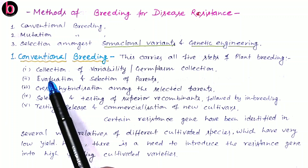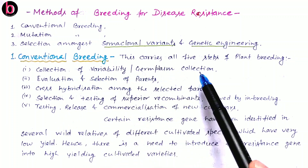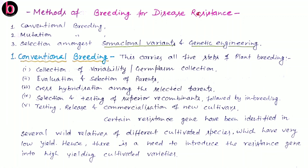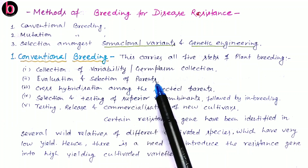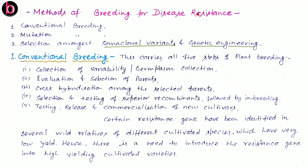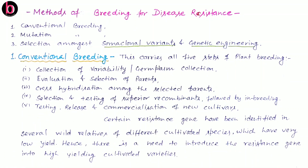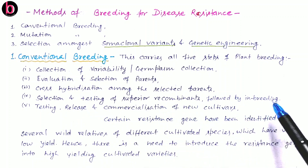The first step is collection of variabilities or germplasm collection — we collect all varieties available within the country or outside, related to resistance for a particular disease. Second is evaluation and selection of parents from those available varieties. Third is cross hybridization among the selected parents, applying single or multiple crosses as suitable between the plants to achieve the desired hybrid.